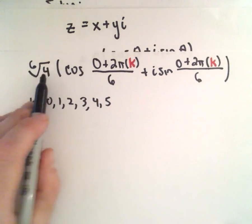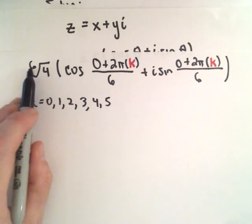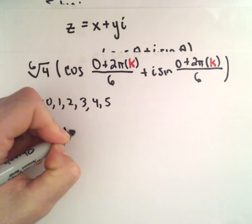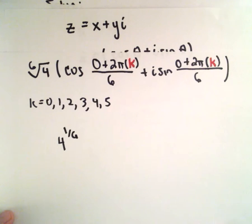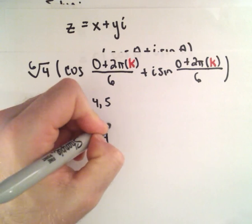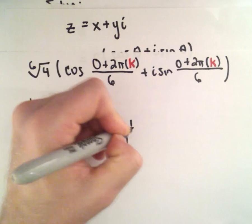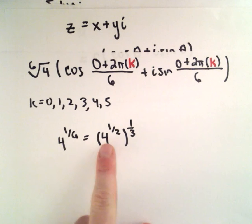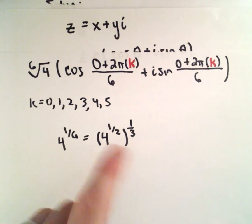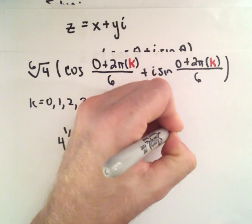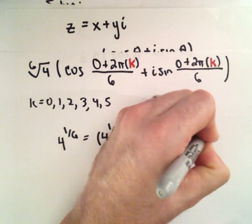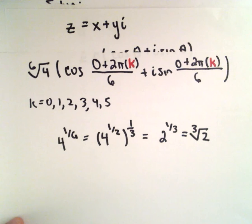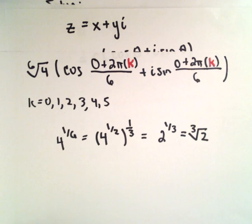One thing I want to point out: we can simplify the sixth root of 4. We can write it as 4 raised to the 1/6 power, which is also 4 to the 1/2 raised to the 1/3 power, since multiplying the exponents gives 1/6. Now 4 to the 1/2 is the square root of 4, which is 2. So we have 2 to the 1/3 power, or the cube root of 2. So I'm going to rewrite the 6th root of 4 as the cube root of 2.